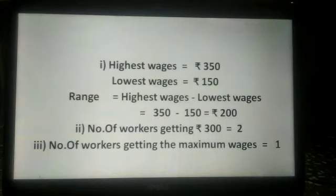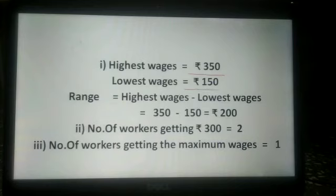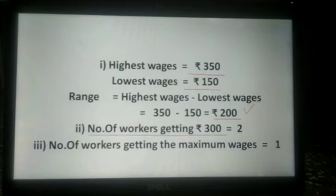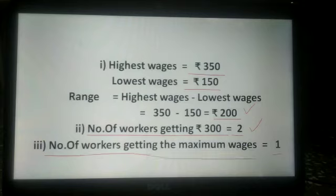Now we answer the questions. In part one, from the table the highest wages equals rupees 350 and the lowest wages equals rupees 150. Range equals highest wages minus lowest wages, so 350 minus 150 equals rupees 200. In part two, the number of workers getting rupees 300 is 2. In part three, the number of workers getting the maximum wages is 1 — so 1 worker is getting the maximum wages.